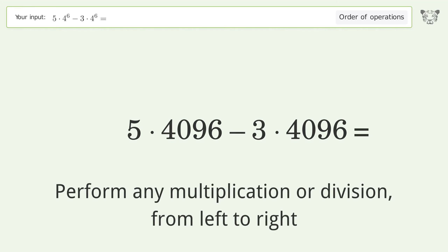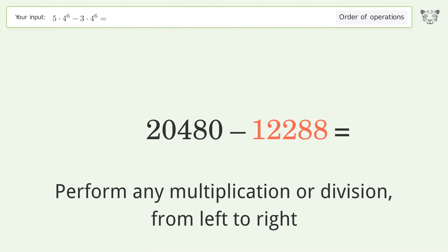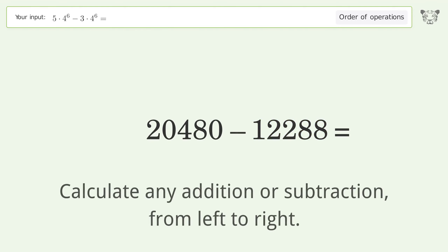5 times 4096 equals 20480. 3 times 4096 equals 12288. Then calculate any addition or subtraction from left to right.